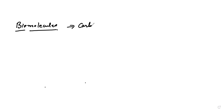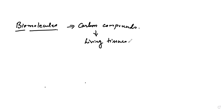So, biomolecules. Now, what are these biomolecules? Biomolecules means nothing but carbon compounds, and these carbon compounds are mainly found in living tissues. We know that CHO — carbon, hydrogen, oxygen — plus some other molecules are also there. They all together make up biomolecules. Bio means living, and then the molecules.